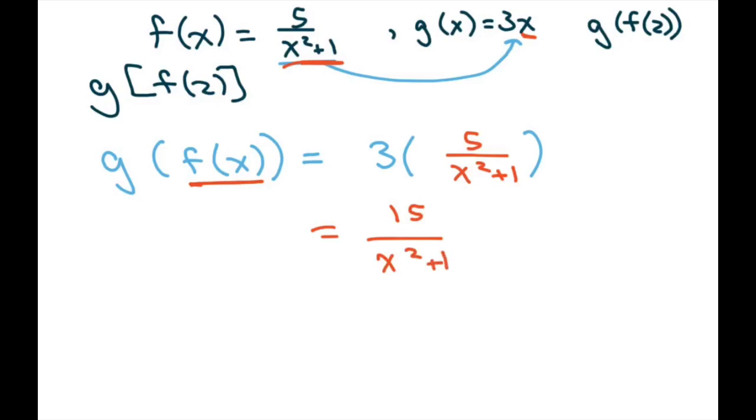Now we're going to plug in the 2. So that would be g(f(2)). That's going to be 15 divided by 2 squared plus 1, or 15 divided by 5, which equals 3.